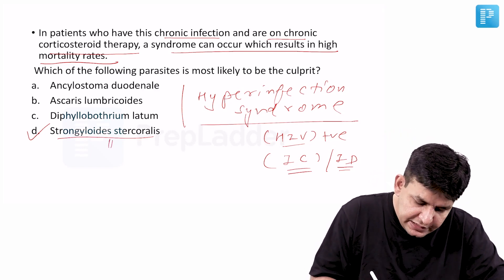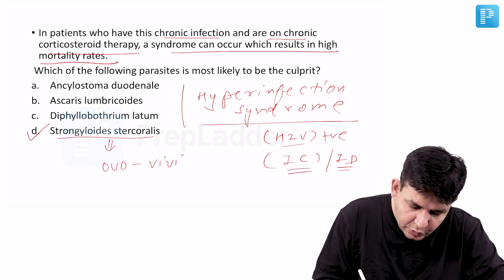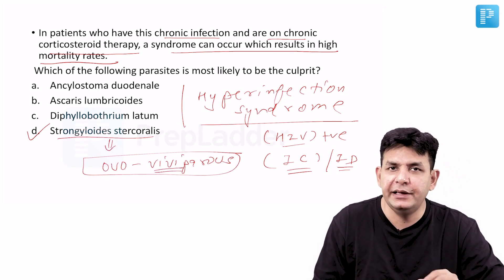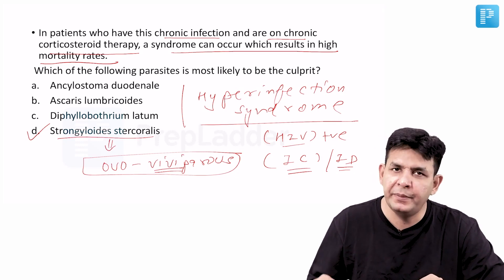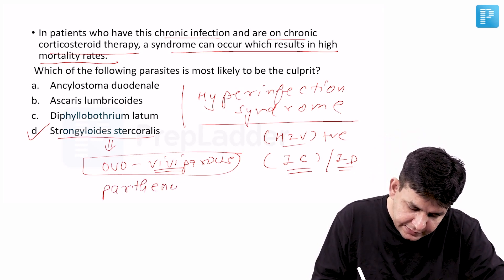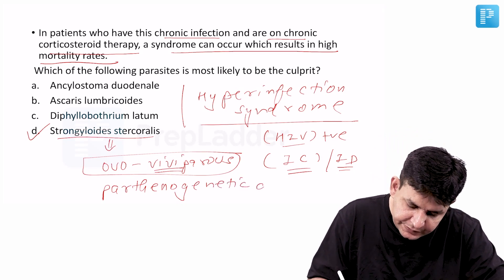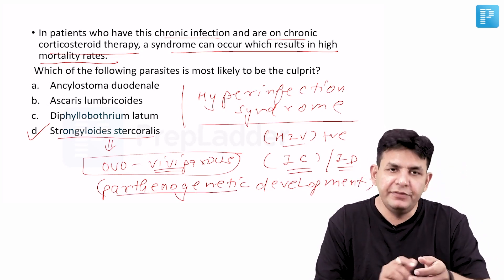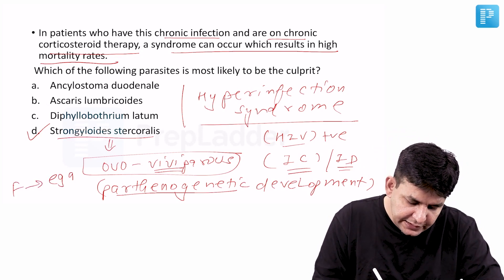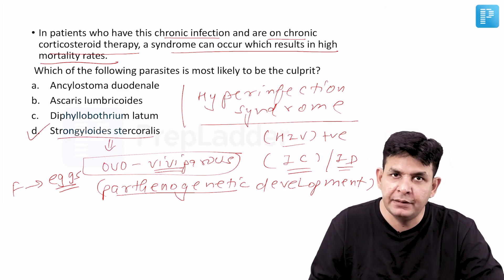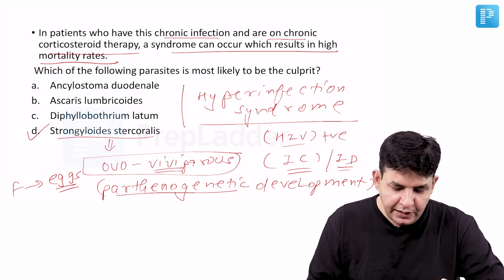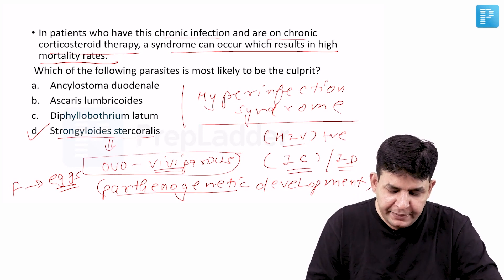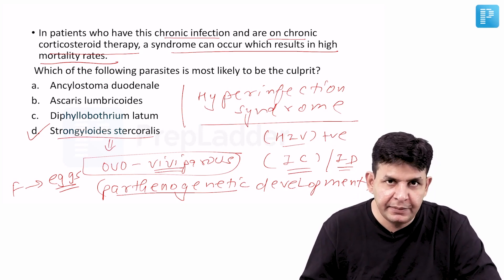Another important point about Strongyloides stercoralis is that it is ovoviparous. The eggs are laid but are never seen because they hatch into larvae immediately. This is termed ovoviparous. It also has a unique type of development called parthenogenetic development, where the females directly lay eggs without males. Auto-infection happens here, and if it becomes massive, it results in hyperinfection syndrome.